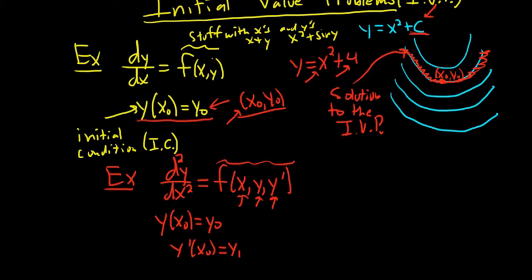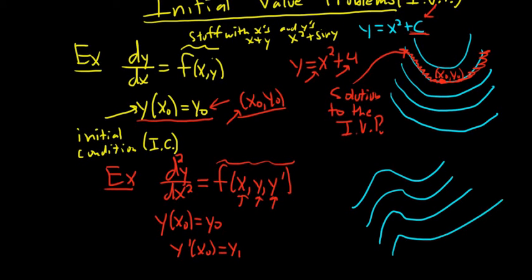So now, again, say we have infinitely many solutions, something like this, right? And then what this does is, obviously, it picks the one that passes through x₀, y₀. So it picks that one. So maybe that would be this one here. So it would pick that one.